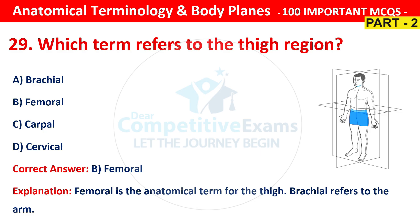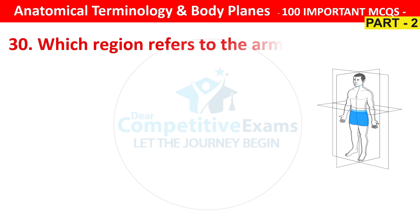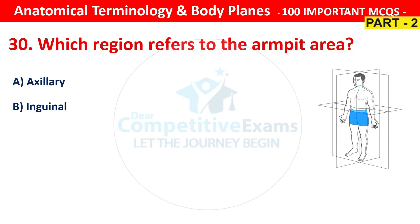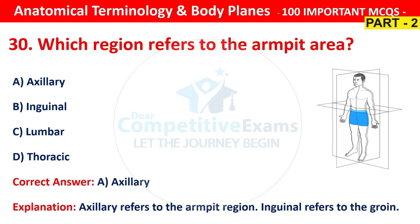Question number 30. Which region refers to the armpit area? Your options are axillary, inguinal, lumbar or thoracic. The right answer is A, that is axillary. Axillary refers to the armpit region. Inguinal refers to the groin.